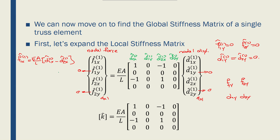For F2x (local), the equation is F2x = (EA/L)(D2x − D1x). The coefficient of D1x is −1, D1y is 0, D2x is 1, and D2y is 0. Because forces and displacements in the local y-direction are zero, four zeros are placed in the remaining rows to complete the expanded local stiffness matrix, which is a 4 by 4 matrix.